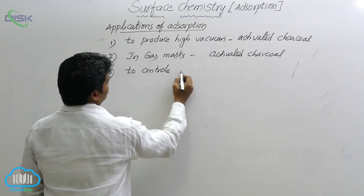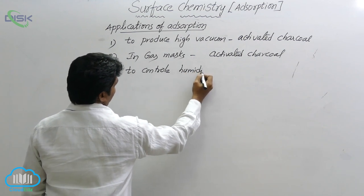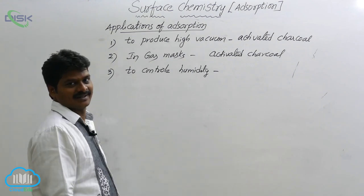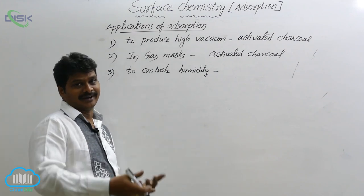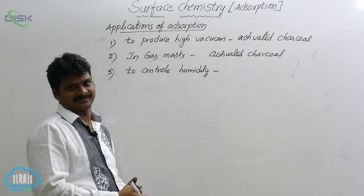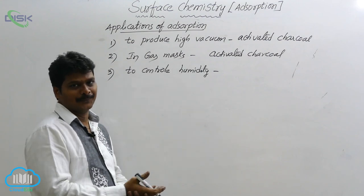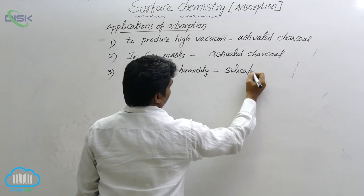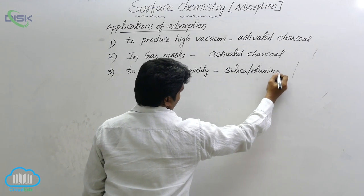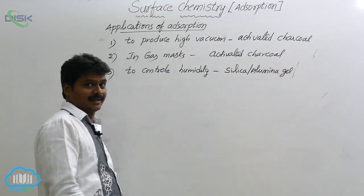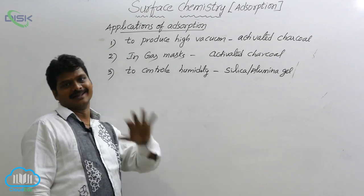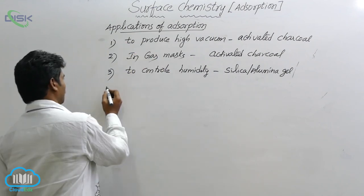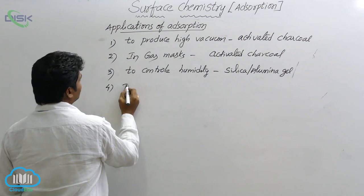These adsorbents adsorb poisonous gases released from the industry without affecting breathing. Oxygen and nitrogen are non-easily liquefiable gases, so they are adsorbed to a lesser extent. Poisonous gases like HCl, ammonia, and SO2 are easily liquefiable gases, so they are adsorbed more. The third application is to control humidity. Humidity means moisture in the atmosphere; more humidity leads to more sweating. To control humidity in a room, silica gel or alumina gel is placed there, which decreases the humidity.